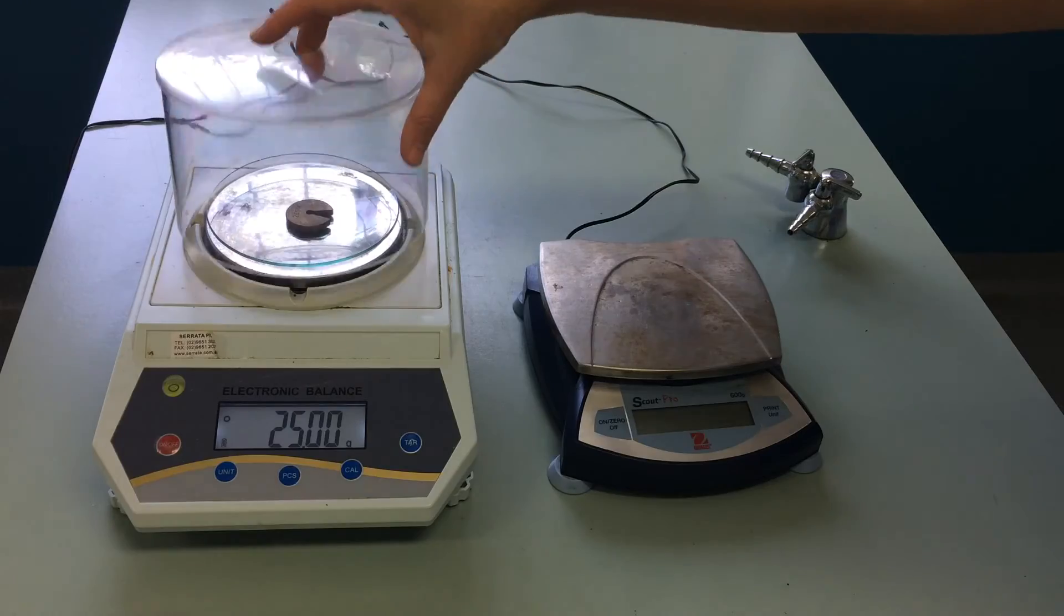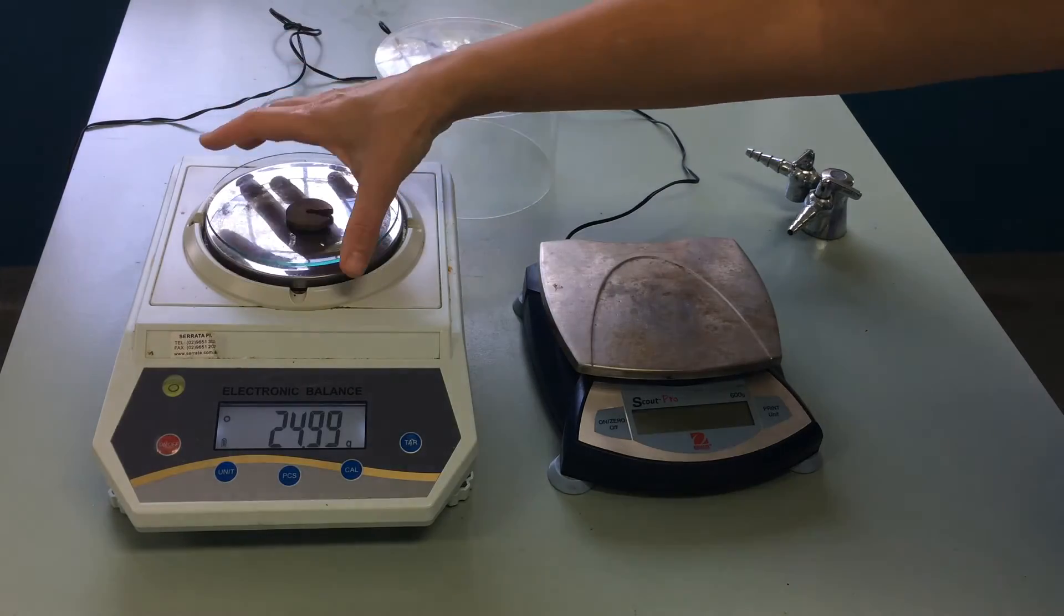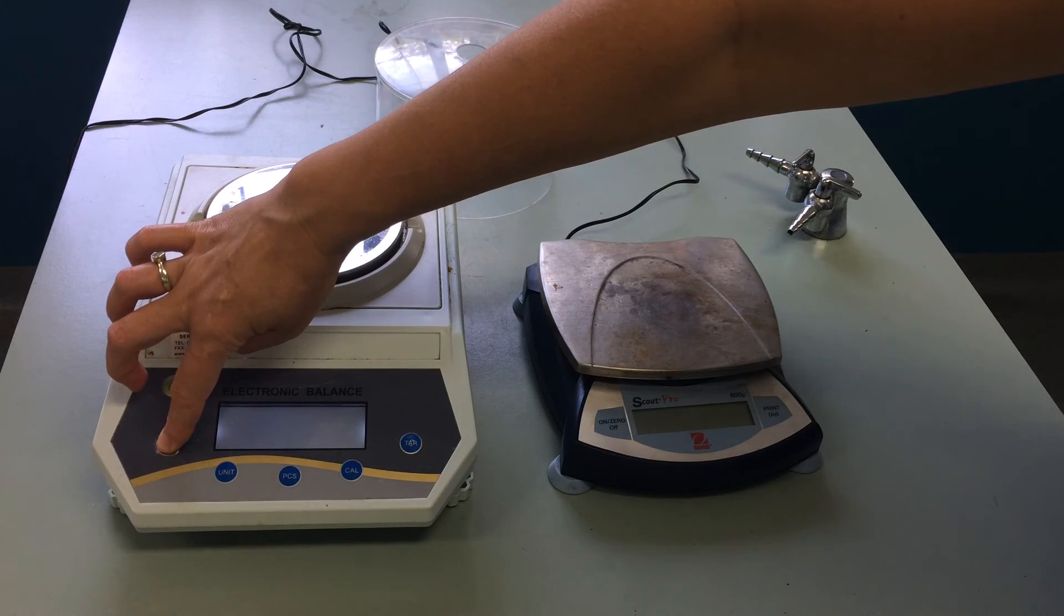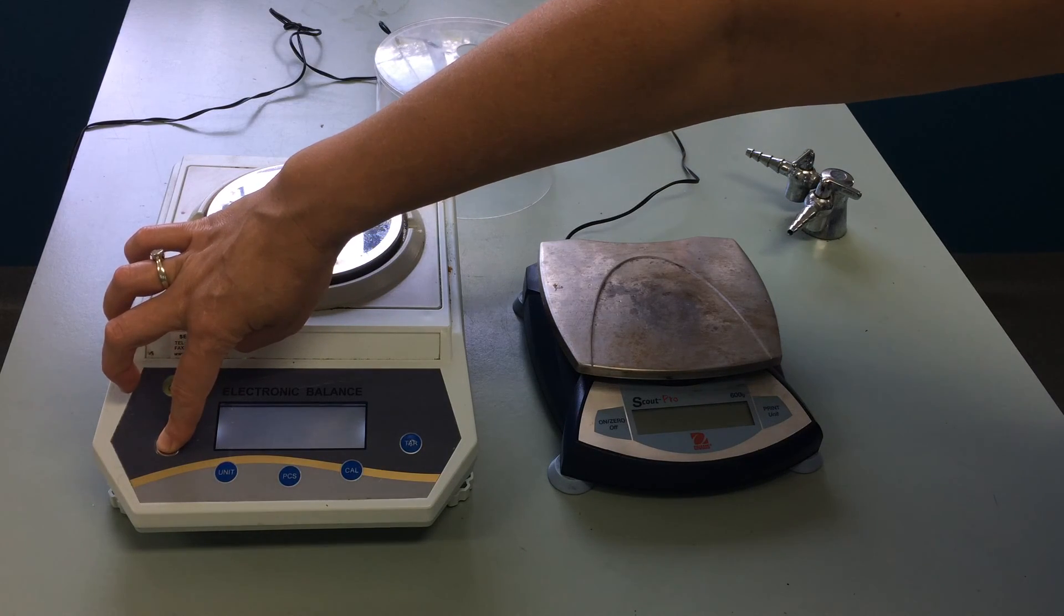When you're finished, take the object you've weighed off and then simply turn the balance off using the on-off button or the switch. Thank you.